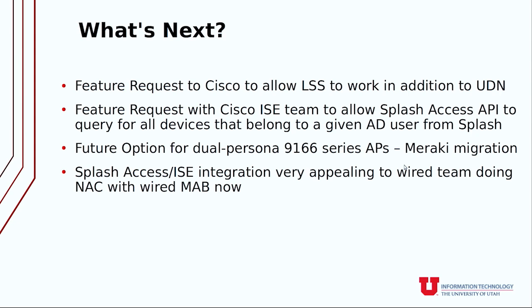What's next? We have a couple of feature requests into Cisco to make UDN work with LSS and to allow querying of Splash Access for groups so you don't have to type MAC addresses — you can just query your name and pull all your devices in. In the future, we think this will work great if and when we migrate to Meraki, since Splash Access is a Meraki partner and already does IPSK on Meraki devices. Our wired team is also finding this works well with their NAC project for registering devices that can't do 802.1X for MAC address bypass. Thank you.